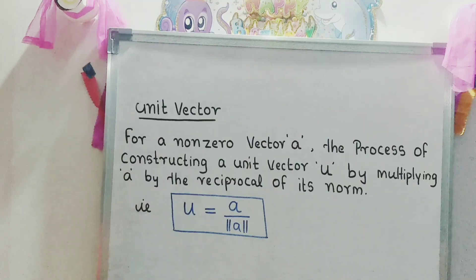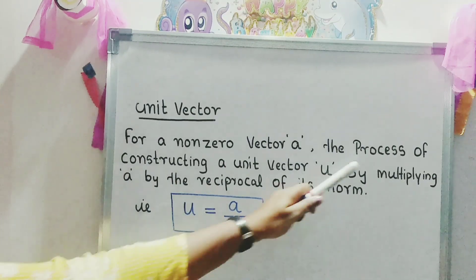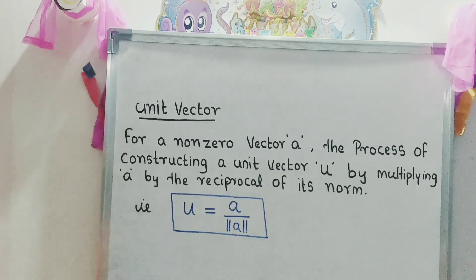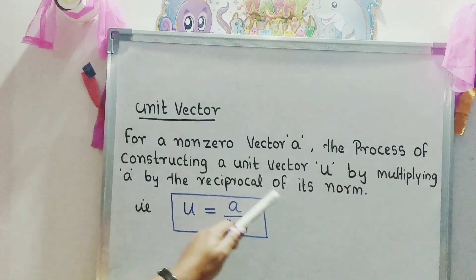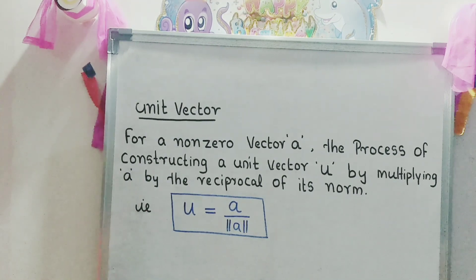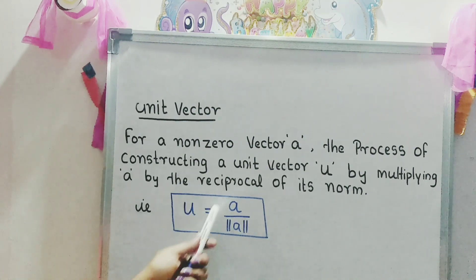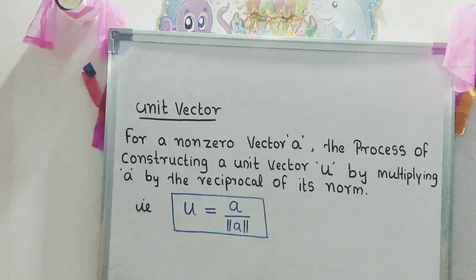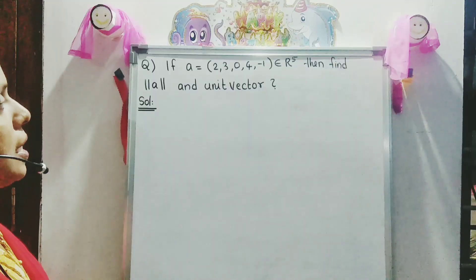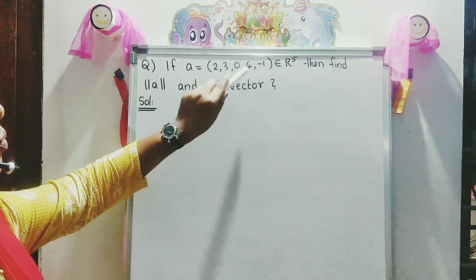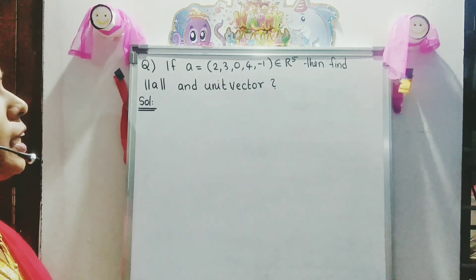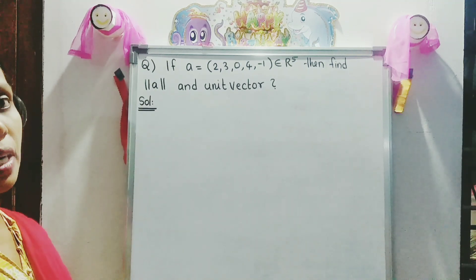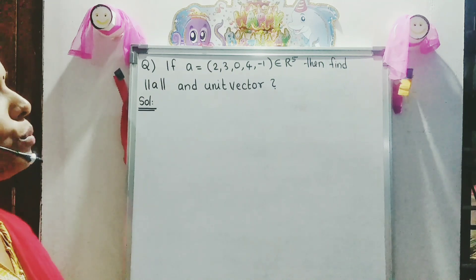Unit vector: for a non-zero vector a, the process of constructing a unit vector u is by multiplying a by the reciprocal of its norm. Example: given a = (2, 3, 0, 4, -1) belonging to R5, find norm A and the unit vector.